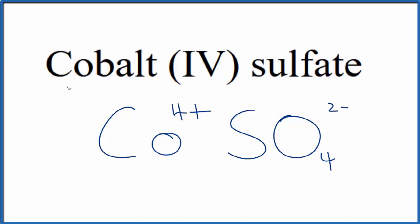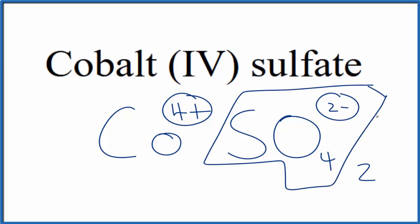Because cobalt(IV) sulfate is neutral—it doesn't have the word 'ion' after it—these charges need to balance. They need to add up to give us a net charge of zero. If we had two of these sulfate ions, 2 times 2- is 4-, which would balance the 4+ out and give us a net charge of zero.